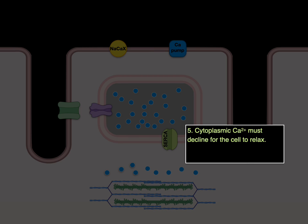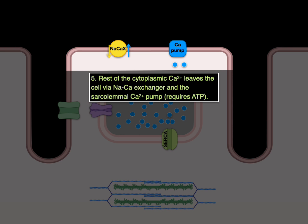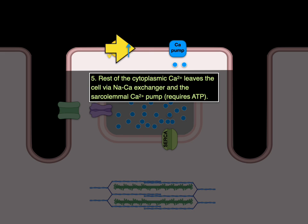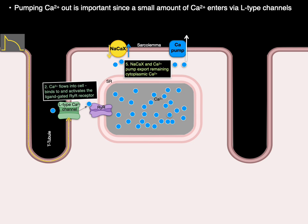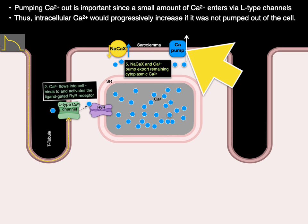The cytoplasmic calcium must now decline for the cell to relax, and most of the calcium is pumped back into the SR via SERCA. SERCA uses ATP to bring this calcium back into the SR. The rest of the cytoplasmic calcium leaves the cell via the sodium-calcium exchanger — sodium moving down its gradient and antiporting calcium against its gradient back out — or the sarcolemma calcium pump using primary active transport with ATP. Pumping calcium out is important since a small amount of calcium enters via the L-type calcium channels, and intracellular calcium would progressively increase if it were not pumped out.